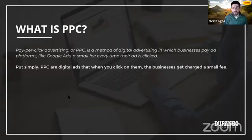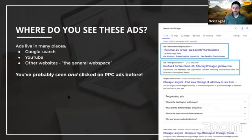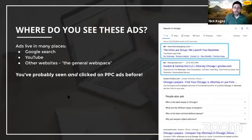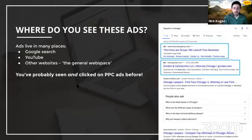You're probably already familiar with PPC. The ads live in many places — most likely you've seen them in Google search, on YouTube during or before a video, and on other websites, which I'm calling the general web space. What you see on other websites are the actual display ads. On the right-hand side are Google search ads — you can tell by the little black 'ad' text next to the listing. These ads are extremely effective at driving people to your website.